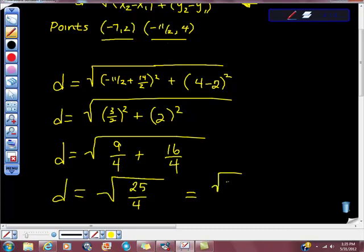25 fourths is equal to the square root of 25 over the square root of 4, which is equal to 5 halves, and that's our distance.